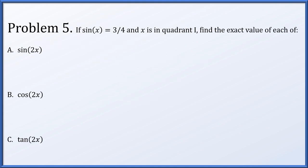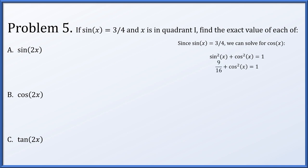In problem 5, if the sine of x is 3 fourths and x is known to be in quadrant 1, we'll find the exact value of three expressions: sine of 2x, cosine of 2x, and tangent of 2x. Since sine of x is 3 fourths, we can solve for the cosine of x using the Pythagorean identity, sine squared x plus cosine squared x equals 1.